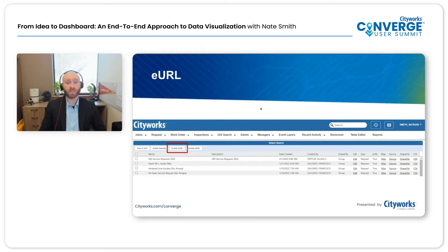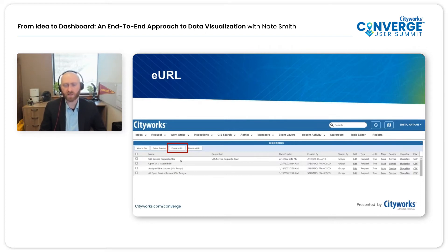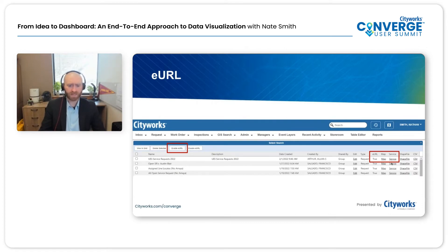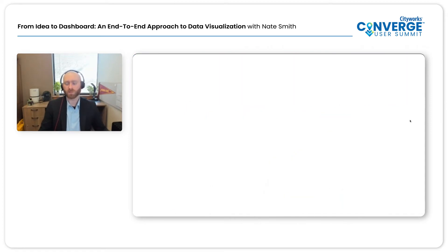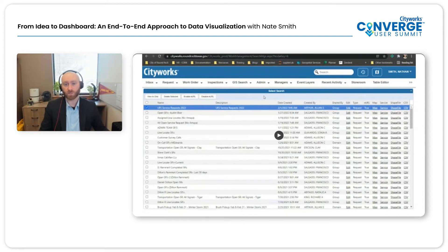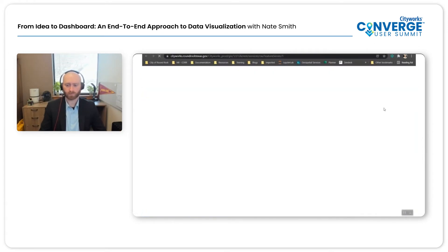Once you've created and saved that search, you can start to generate the eURL and bring it into ArcGIS. The eURL is really where the magic happens, and it's something we leverage all the time here at the City of Round Rock. It's extremely easy — there's an enable eURL button within the search pane. If your CityWorks administrator hasn't enabled eURL by default, you can simply check the box of your saved search and enable eURL. The three most important columns are eURL status, map, and service — those provide you with links to those eURLs.